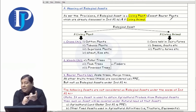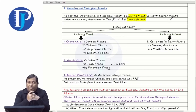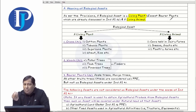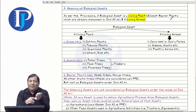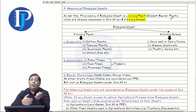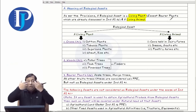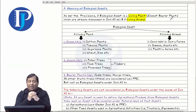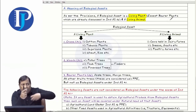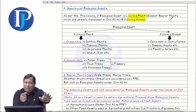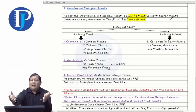In biological assets, one is plants and the next is animals. The bearer plant is not included in plants because it comes under INDS-16. We had a discussion about the difference between a normal plant and a bearer plant. If a plant itself becomes an agricultural produce, then it is your biological asset. And if any plant provides you with agricultural produce, then it is your bearer plant.